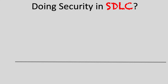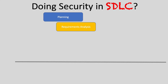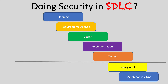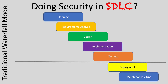Let's look at the traditional steps. It starts off with planning, then requirements analysis — really defining the requirements of our software — the designing aspects, the actual implementation and coding, then testing what we've produced and designed, deploying that in production, and finally the ongoing maintenance and operations aspect. This is loosely considered the traditional waterfall model.